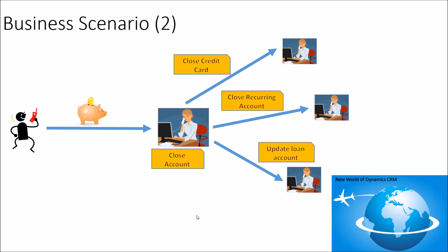Unless those three dependent child tickets are completed, you cannot actually close the account. This is a typical example of a parent-child relationship where closing the parent ticket depends on closing all the child tickets. You can configure a behavior so that unless all child cases are closed, you cannot close the parent case.